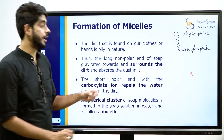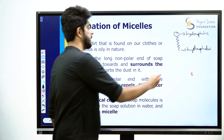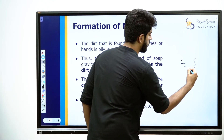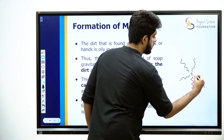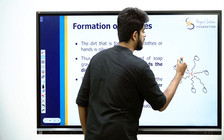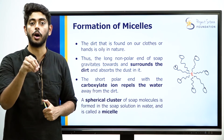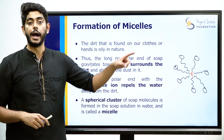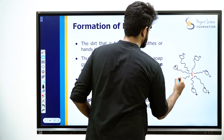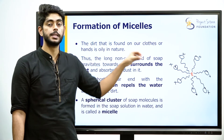The hydrophobic end goes into the oil droplet and attacks the dirt. The hydrophobic ends surround and go into the oil, fully enclosing it. The hydrophilic ionic ends remain facing outward toward the water. The long non-polar end of soap gravitates towards and surrounds the dirt and absorbs the dust in it. The short polar end with the carboxylate ion repels the water away from the dirt.